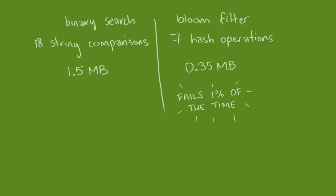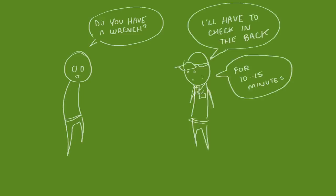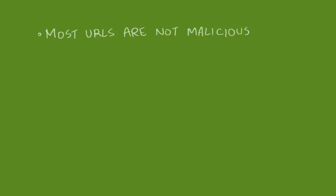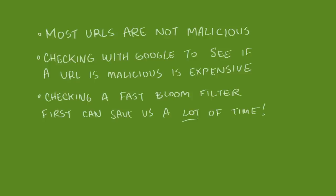A common use case for bloom filters is to check if something doesn't exist before making an expensive call to find it. Google Chrome, for example, uses a bloom filter to flag malicious URLs. If a URL is flagged as potentially malicious by the fast, small bloom filter, then it's worthwhile to spend the time to make a much more expensive call to find out the details.